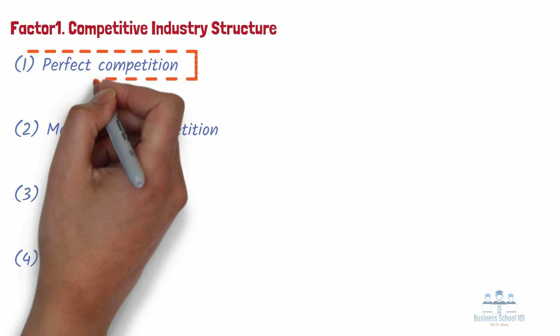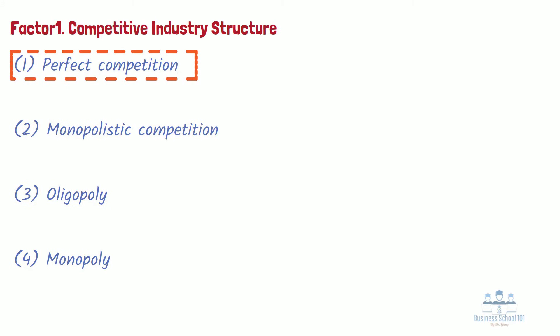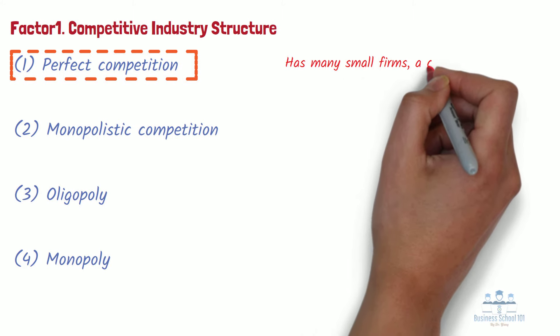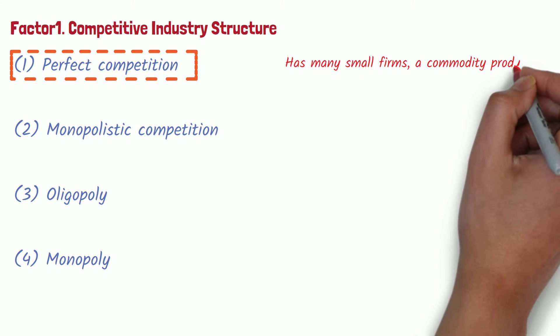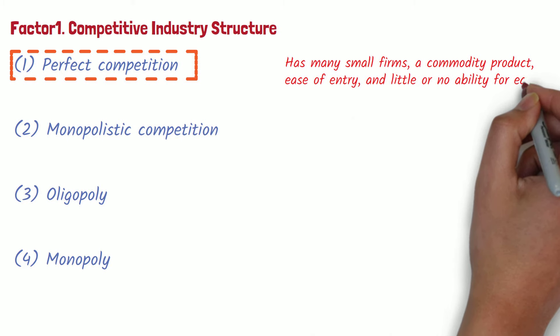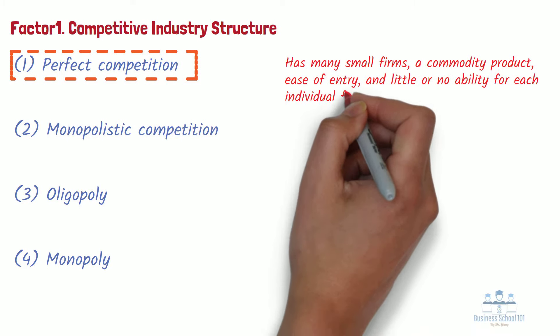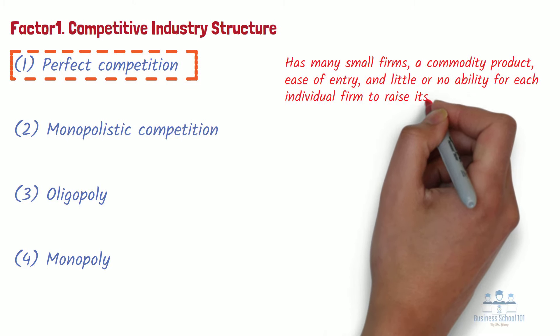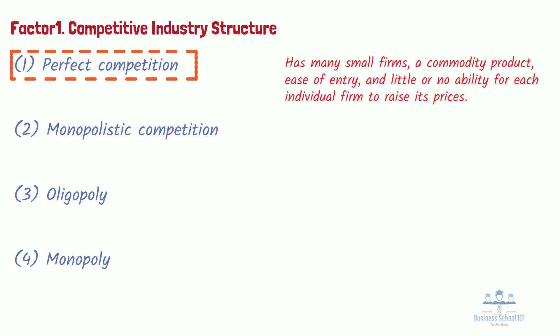First, perfect competition. A perfectly competitive industry is fragmented and has many small firms, a commodity product, ease of entry, and little or no ability for each individual firm to raise its prices. The firms competing in this type of industry are approximately similar in size and resources.